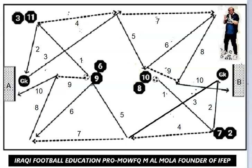Consider that the distance between the two goals is 50 yards only, and number ten, number eight, number nine, and number six start in the central training area. Enjoy it, bye!